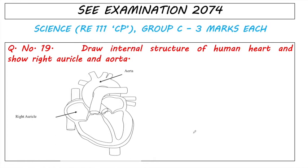Hello, SEE examination 2074, Science Group C, Question 19: Draw internal structure of human heart and show right auricle and aorta. The most difficult part of this question would be to draw the human heart, so you should really practice it.